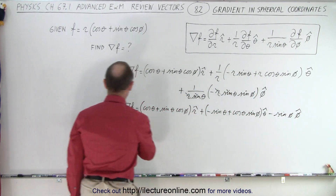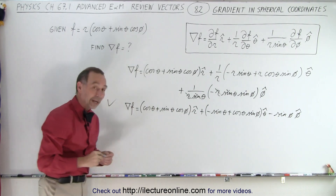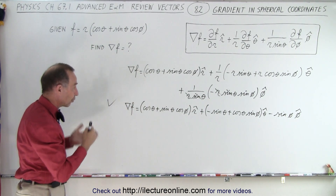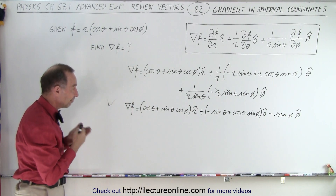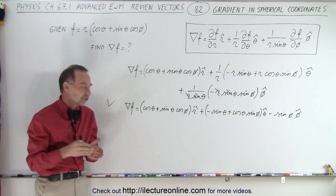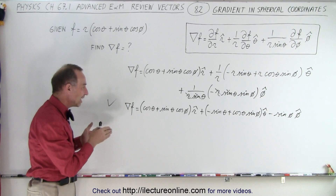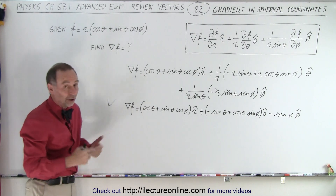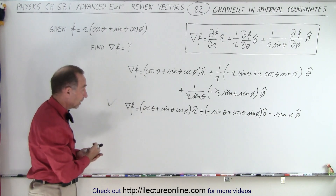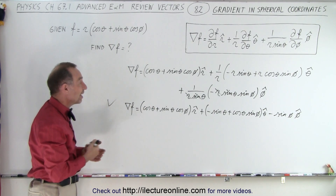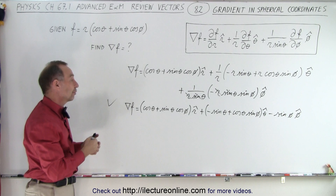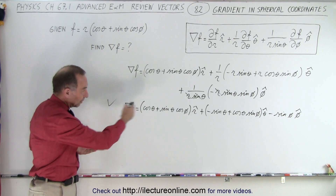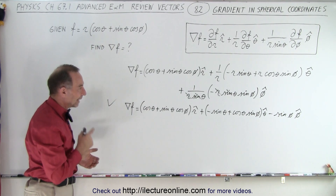And so that is the answer for the gradient of f. Notice you get a vector quantity — a vector that points in the direction of the largest change of that function at a particular point. All you have to do is plug in a certain theta and certain phi, and of course the magnitude of that vector gives you the magnitude of the gradient. And that is how it's done.